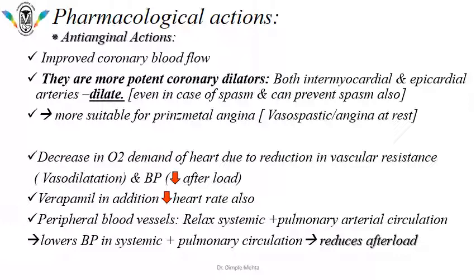Regarding pharmacological and anti-anginal actions: calcium channel blockers can improve coronary blood flow and are potent coronary dilators. Both intramyocardial and epicardial arteries are dilated. Even in case of spasm, they can prevent spasm. They are more suitable for vasospastic Prinzmetal's angina where beta blockers are contraindicated — amlodipine should be considered for Prinzmetal's angina. They decrease oxygen demand of the heart due to reduction in vascular resistance from vasodilatation and decreased blood pressure, reducing afterload. Verapamil additionally decreases heart rate.